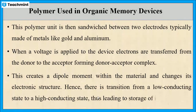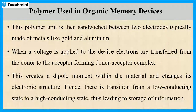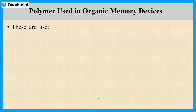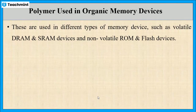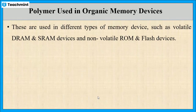Hence, there is a transition from a low conducting state to a high conducting state, which leads to the storage of information. These polymers are used in different types of memory devices such as volatile memory devices — DRAM and SRAM — as well as non-volatile memory devices — ROM and FLASH devices.